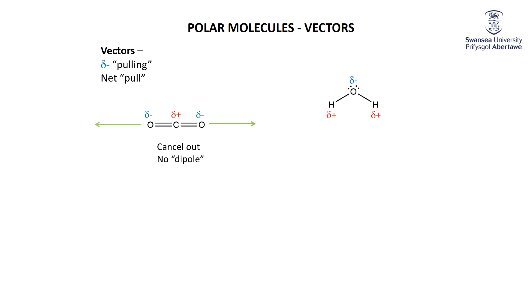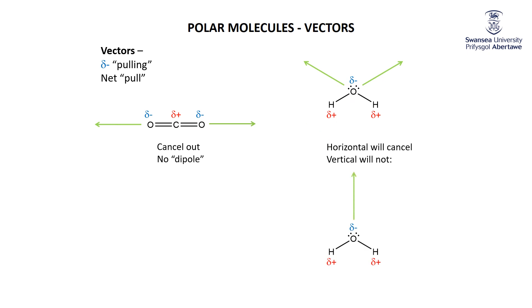In water, the oxygen delta-minus is pulling electrons in one direction from each O–H bond. When you look at the net pulling effect and combine those vectors, the horizontal components cancel out, but the vertical components both go in the same direction and add together. So overall, water has a dipole — that pulling of electrons doesn't completely cancel out. We can represent this with an arrow starting from a fake positive sign, showing the direction of electron pull toward the slightly negative end.